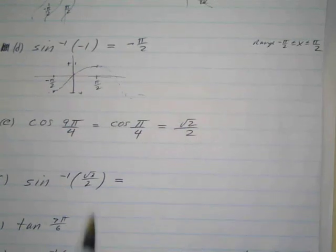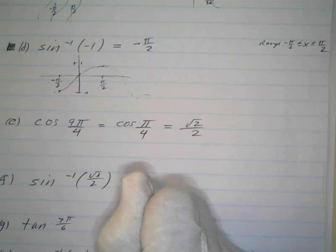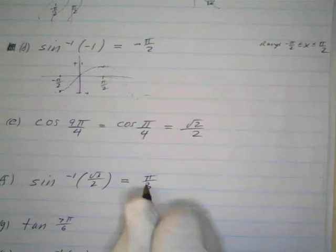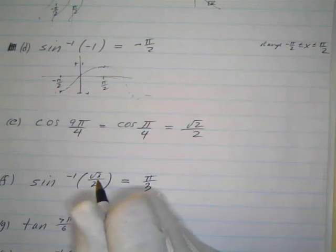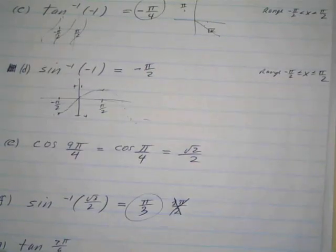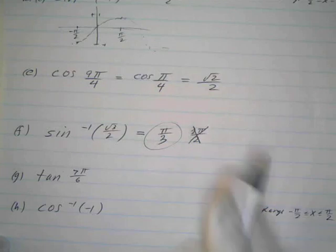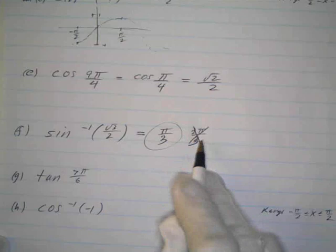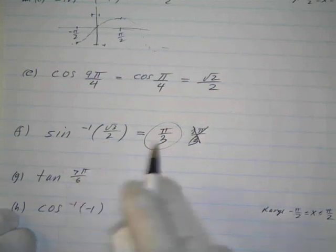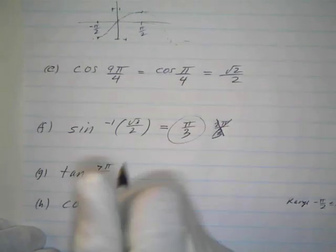Part F: the inverse sine of √3/2. When is the sine equal to √3/2? That would be π/3. It's also positive in the second quadrant at 2π/3, so we might think there are two answers. But we have to remember the restriction: the sine must be between -π/2 and π/2, so 2π/3 is not a possibility — only π/3. Note that if we took the sine of 2π/3 we'd also get √3/2, but the inverse function's range is restricted to -π/2 to π/2.